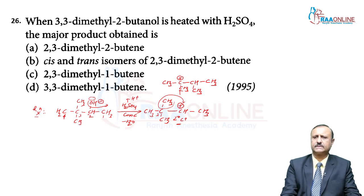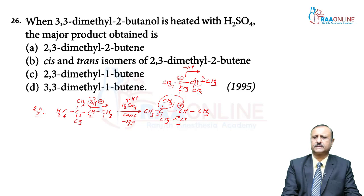After the tertiary carbocation is formed, H⁺ ions are removed. Two positions are available for H⁺ removal. When H⁺ ions are removed from the adjacent carbon atom, a bond forms between those two carbons and you get a higher substituted alkene — the major product.